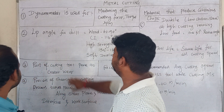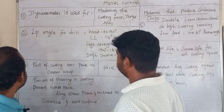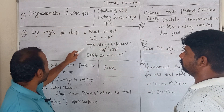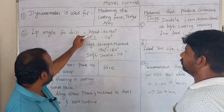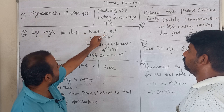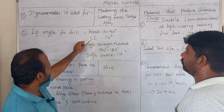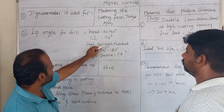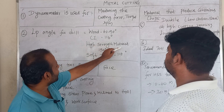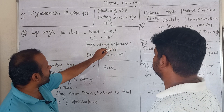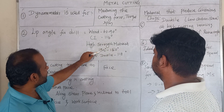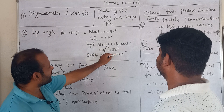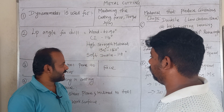That's the lip angle for drilling. The lip angle is 60 to 90 degrees. For cast iron it is 116 degrees. For high strength material it is 135 to 150 degrees. For soft and ductile materials it is 118 degrees.